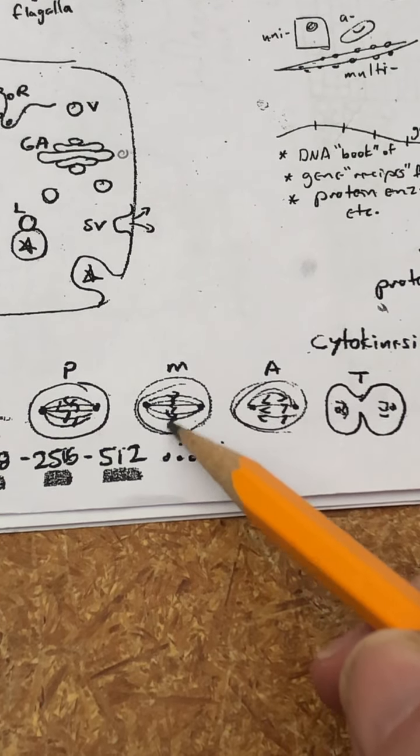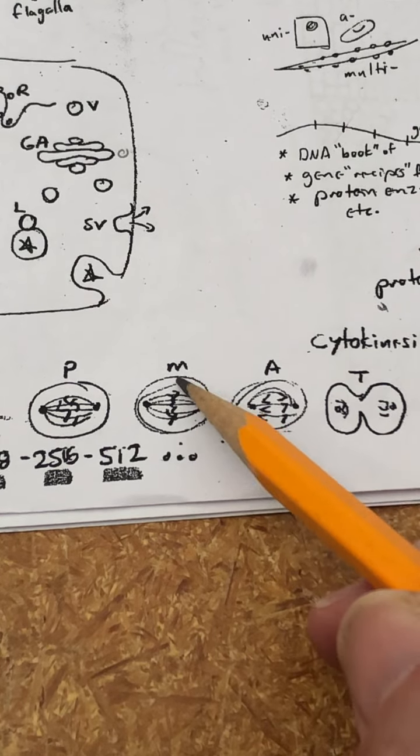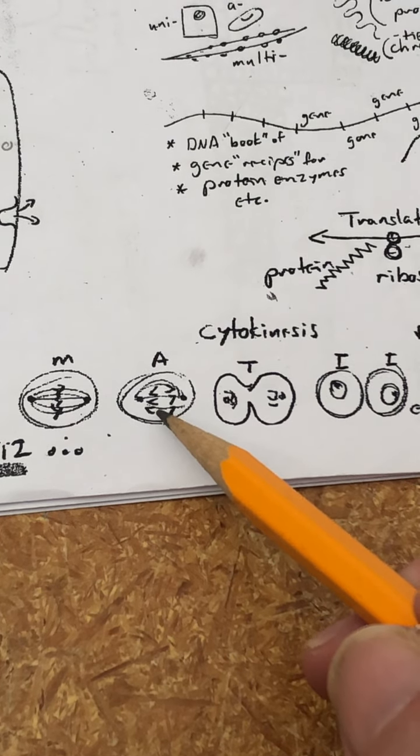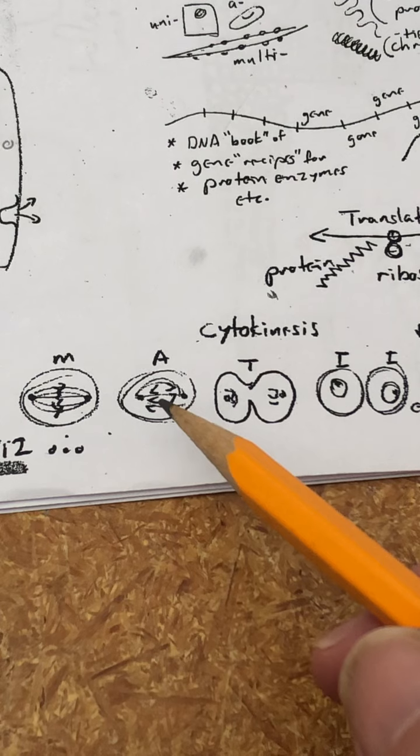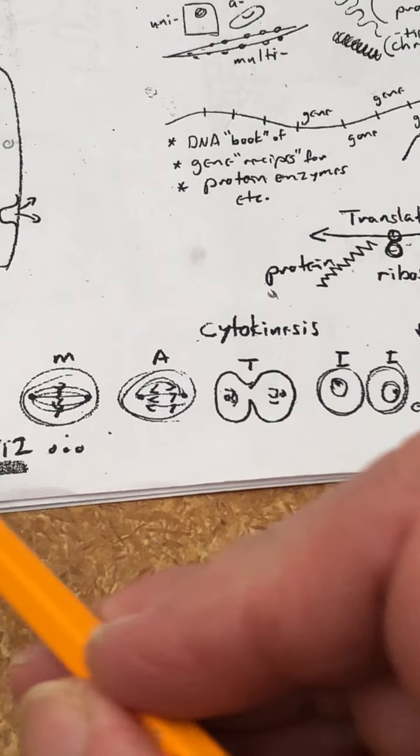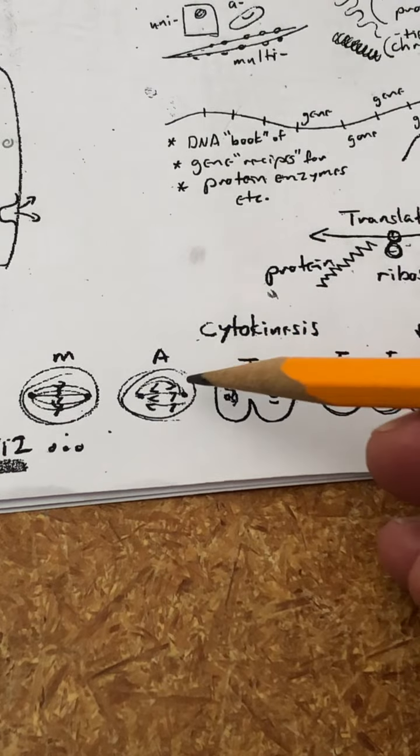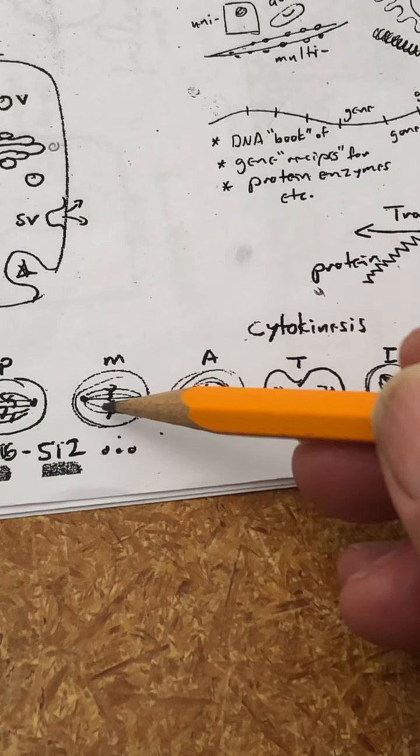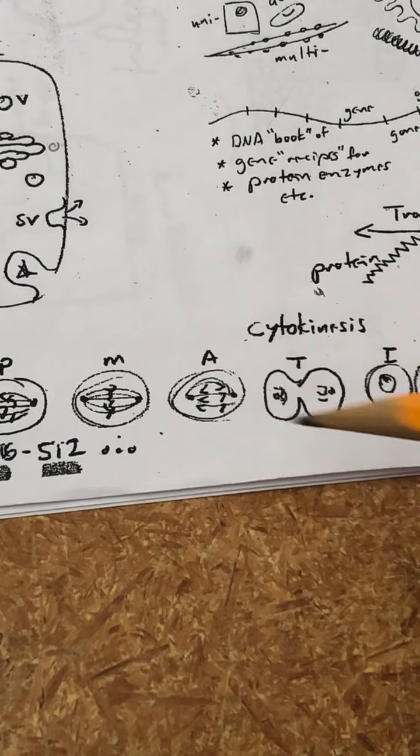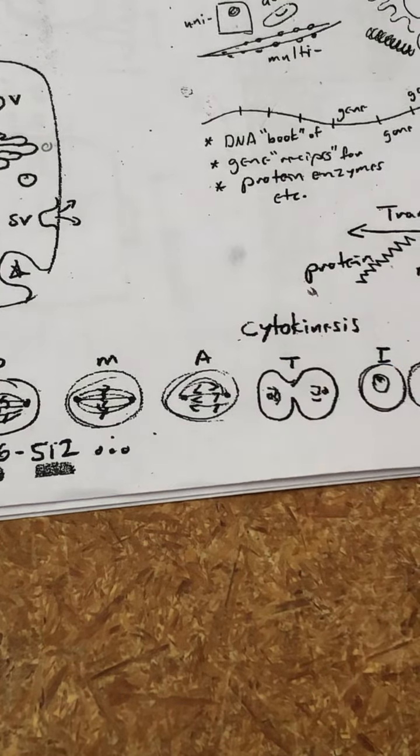In metaphase, the chromosomes are drawn towards the middle of the cell. In anaphase, the two sides of the DNA molecules, because they have been copied before this point, the two sides are ripped away from each other. Each side was called a chromatid until they're ripped apart, and now each one is called a chromosome.